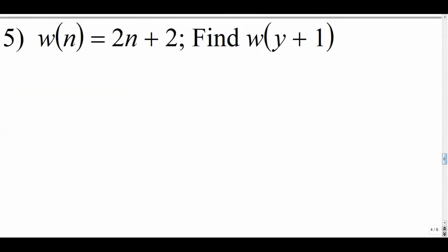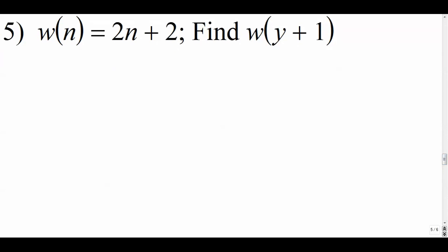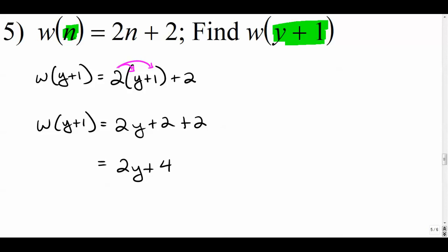Number 5: what happens when we plug an expression in for n? So we're just going to do a straight substitution again. This time it's a little bit more abstract. Every time we see an n, we're going to replace it with y plus 1. So w of y plus 1: we're going to distribute here, 2 into that binomial, 2y plus 2 plus 2. So the answer to this is not as nice as the others but it's 2y plus 4. These combine.